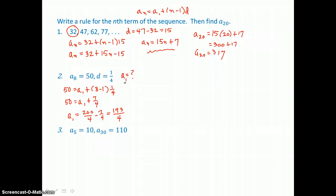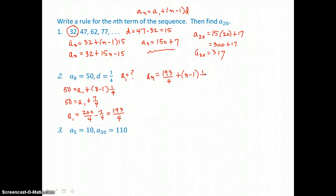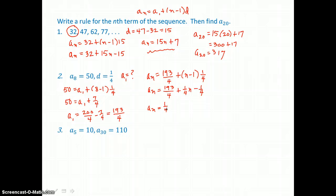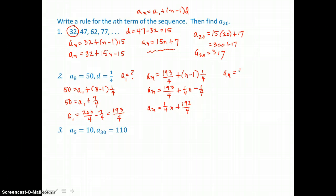Now we have the first term and the common difference, so we can write a rule for the nth term. Substituting 193 fourths for the first term and 1 fourth for the common difference, then distributing on the right gives 1 fourth n minus 1 fourth. Adding like terms gives 1 fourth n plus 192 fourths, which simplifies. So our rule is a sub n equals 1 fourth n plus 48.